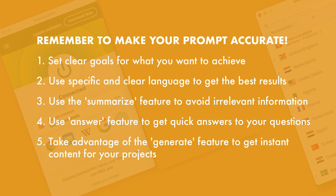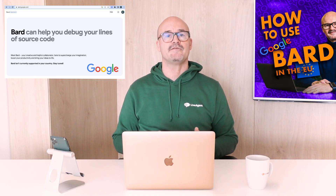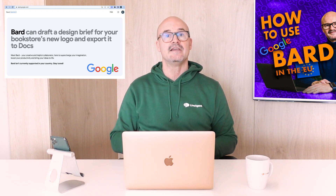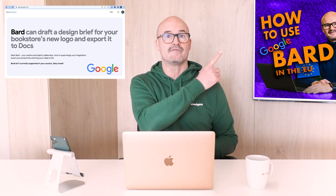Number one: set clear goals for what you want to achieve. Use specific and clear language to get the best results. Use the summarize feature to avoid irrelevant information. Use the answer feature to get quick answers to your questions, and take advantage of the generate feature to get instant content for your projects. And by the way, to watch my video on the top five tips for using Google's AI chatbot BARD, click the link above right now.